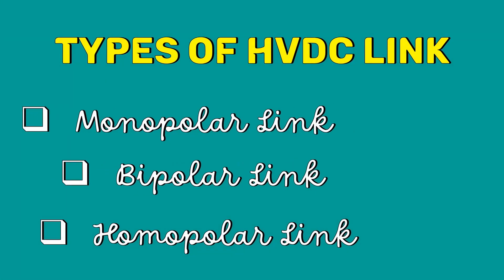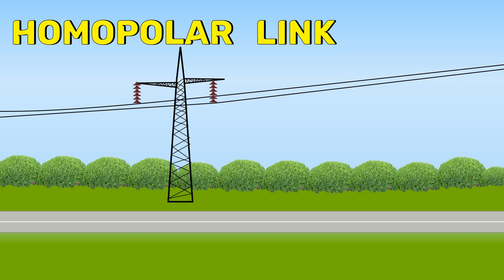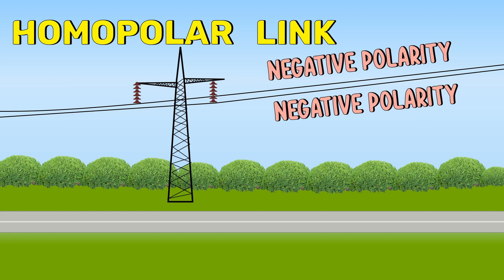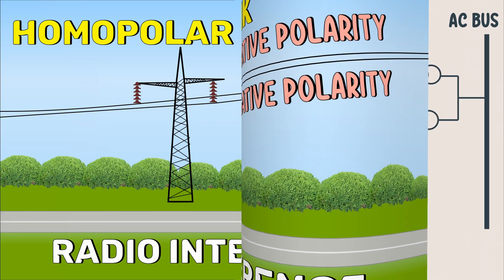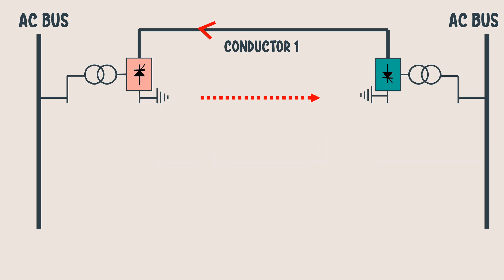Now let's move on to the homopolar link. Homo means same. As the name indicates, the homopolar link has two or more conductors, all having the same polarity. Usually, negative polarity is preferred to reduce radio interference. Here, the ground acts as a return path. If a fault occurs in one conductor, the converter equipment can be reconnected so that the healthy conductor can supply more than 50% of the rated power.